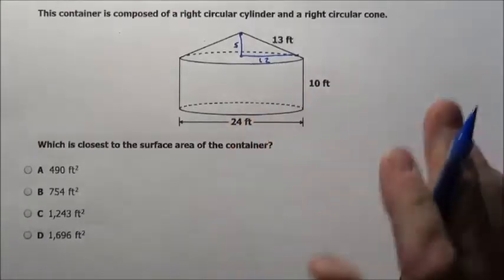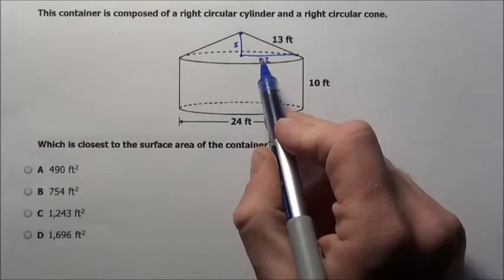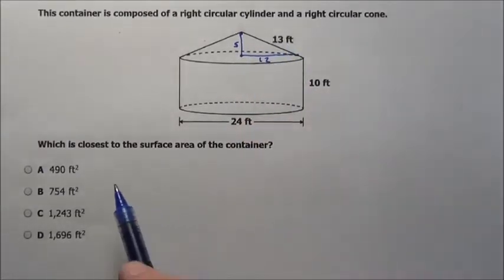And that would tell us the height is 5, but we don't need that in this problem. I did the 5 by using the Pythagorean theorem, 12 squared plus 5 squared equals 13 squared.